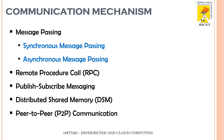The fourth mechanism is Distributed Shared Memory, or DSM. In this model, multiple nodes in a network share a global memory space. The nodes can read and write to this shared memory, which allows them to communicate and exchange data indirectly — they are not communicating directly with each other, but indirectly through shared memory.